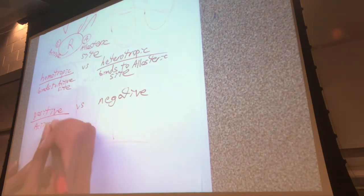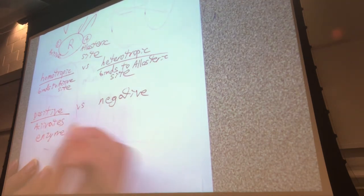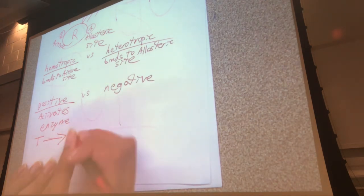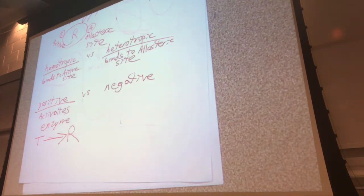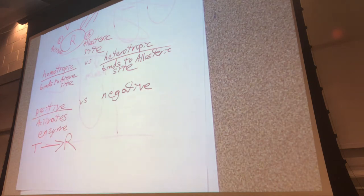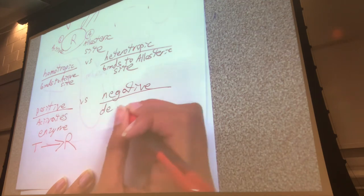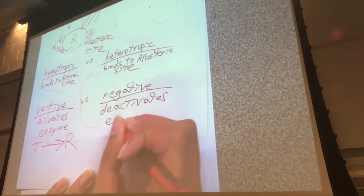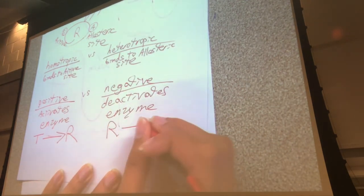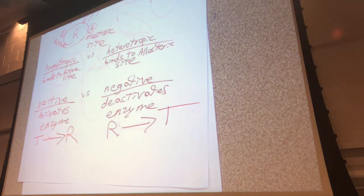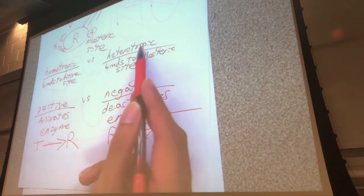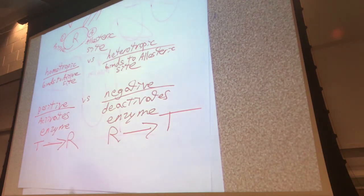Heterotropic means the effector doesn't go to the active site — it goes to the allosteric site instead. The phrase positive effector means it activates the enzyme — it causes a shift from the tense form to the relaxed form, converting inactive enzyme into active enzyme. Negative effector therefore deactivates the enzyme — it converts some of the relaxed, active stuff into the tense, inactive stuff.